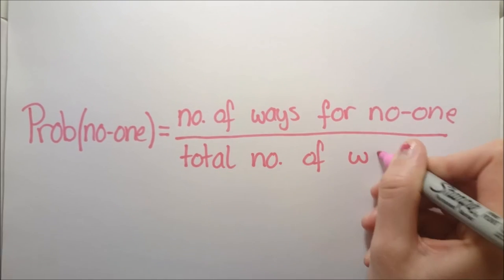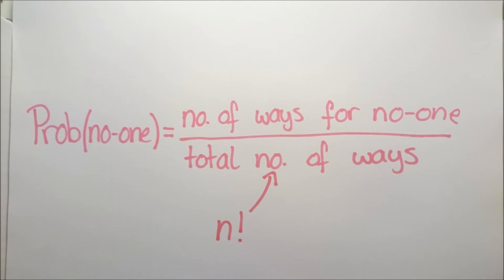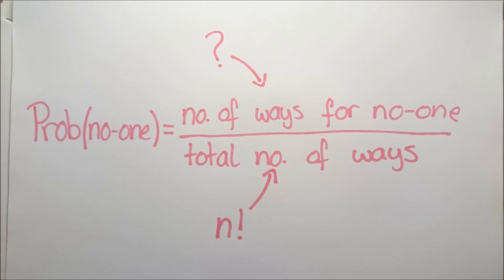So what are the odds? First of all we can see that the probability that no one draws their own name out is equal to the number of ways that no one draws their own name divided by the total number of ways to draw names. We also assume there are n people. We know that the total number of ways is n factorial so this suffices to find the number of ways for no one to draw their own name.